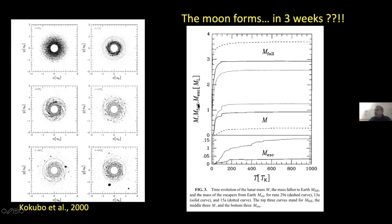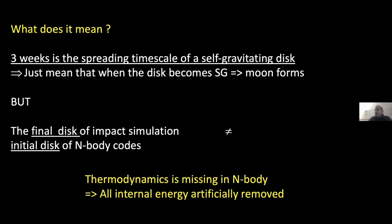Those simulations show the proto-Moon forming in only about three weeks, but that is not the whole story. Those are hard-sphere simulations with no internal energy in the disk. The true timescale between the giant impact and moon formation is dominated by the cooling timescale — how long it takes the disk to radiate away its internal energy.